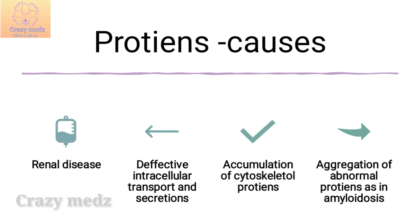The major causes of protein accumulation are renal disease, defective intracellular transport and secretion, accumulation of cytoskeletal proteins, and aggregation of abnormal proteins as in amyloidosis. In renal disease, reabsorption droplets are most commonly seen in the endoplasmic reticulum of proximal renal tubules, producing large homogenous eosinophilic inclusions called Russell bodies.